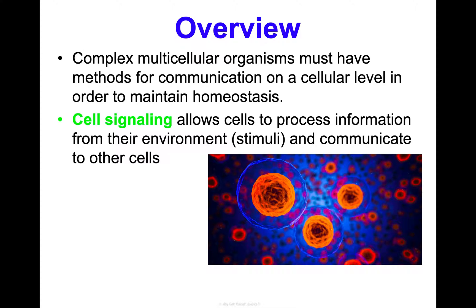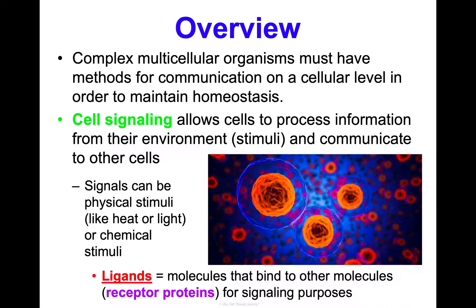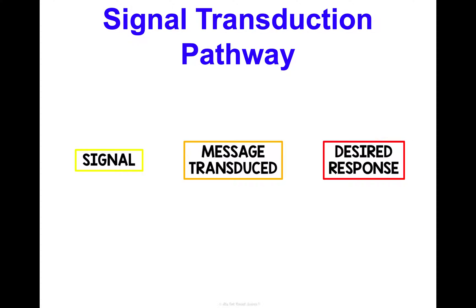Cell signaling allows cells to process information from their environment — stimuli — and then communicate that information to other cells. These signals can be physical, like heat or light change, but they can also be chemical too: ligands. A ligand is a specific term to represent molecules that bind to other molecules called receptor proteins for signaling purposes — the signaling molecule.